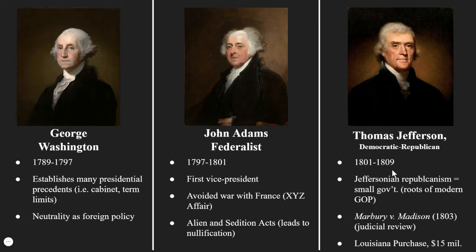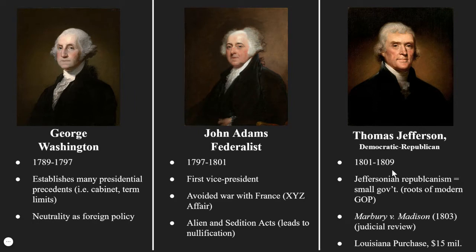George Washington immediately adopts a policy of neutrality for foreign policy. The United States in its infancy is going to be very isolationist, very hands-off in foreign conflict. This sets him at conflict with Thomas Jefferson and others aligned with Jefferson early on, particularly around the French Revolution, which you should have studied in world history.